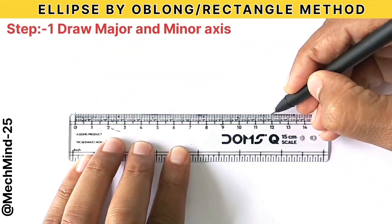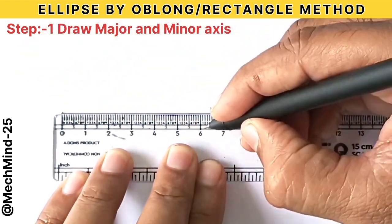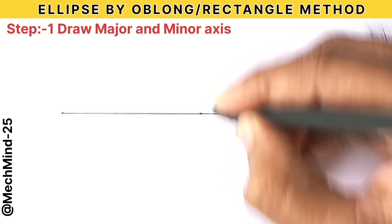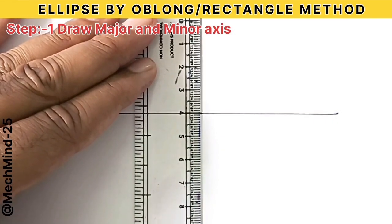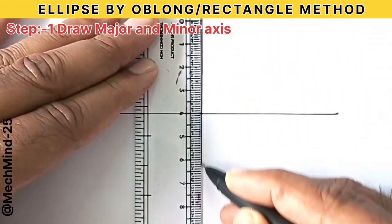First step is drawing major and minor axis. Take a ruler and draw a horizontal line of 120 millimeter. This will be your major axis. From the center of this line, draw a vertical line of 80 millimeter which will be your minor axis.